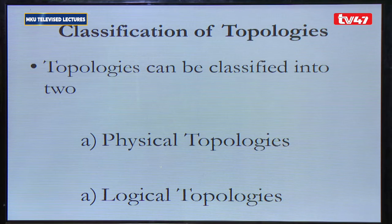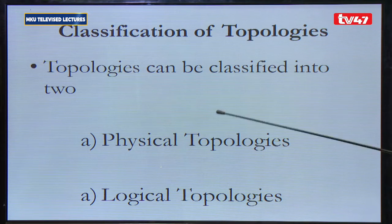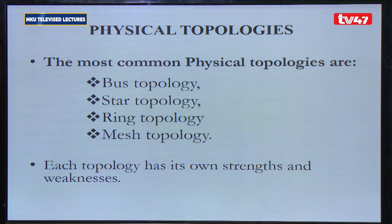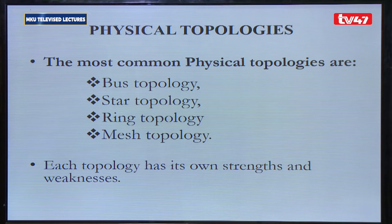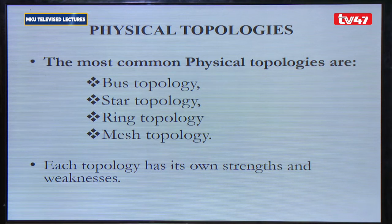We have the physical topology and we have the logical topology. When you talk of a physical topology, we are referring to the physical layout of the network, the physical structure of the network. When you look at the network physically, you can be able to tell how computer A and computer B are connected together. That is the physical topology.